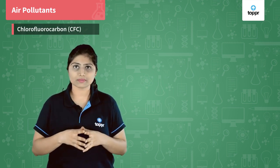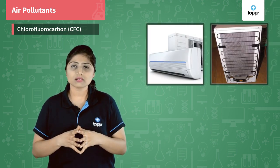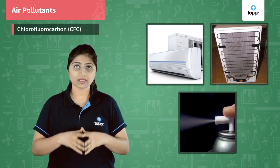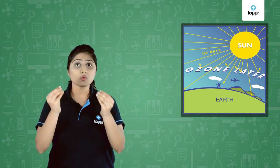Another major air pollutant is CFC, chlorofluorocarbon. CFCs are used in refrigeration, air conditioners, and aerosol sprays, but they are a major problem for our ozone layer. The ozone layer protects us from the harmful UV rays of the sun, but the use of CFCs has created holes in the ozone layer. The good news is that scientists have found a solution — nowadays CFCs are being replaced by less harmful chemicals.